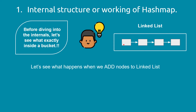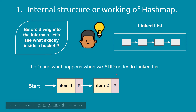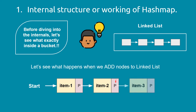Initially a linked list has zero nodes. Then we add a first node with item one — the pointer is null because it points nowhere. When we add a second node, the pointer of the first node points to it. Adding a third node makes the second node's pointer point to it. This is how nodes are added to a linked list one by one. A bucket is a linked list with zero, one, or more nodes.